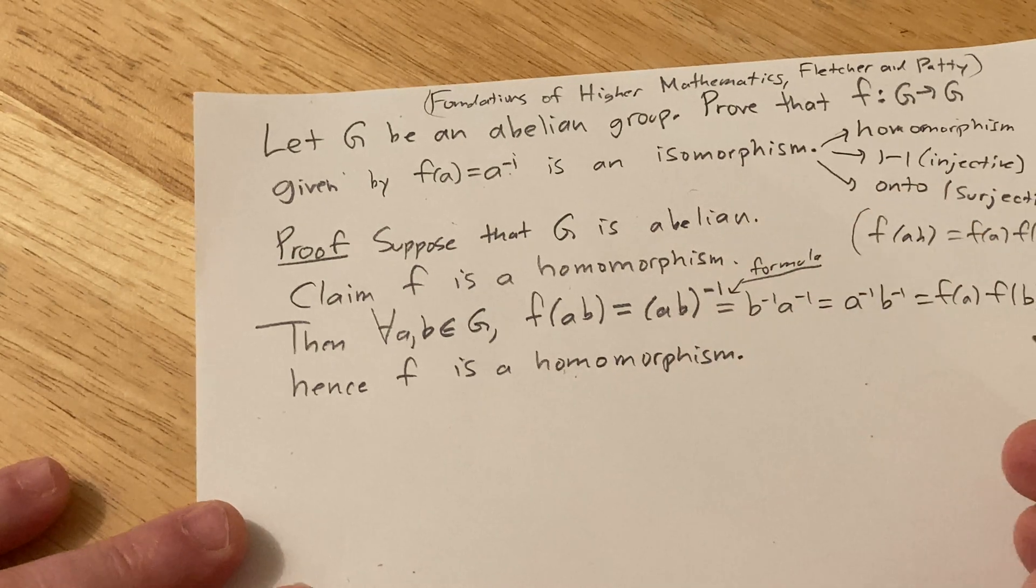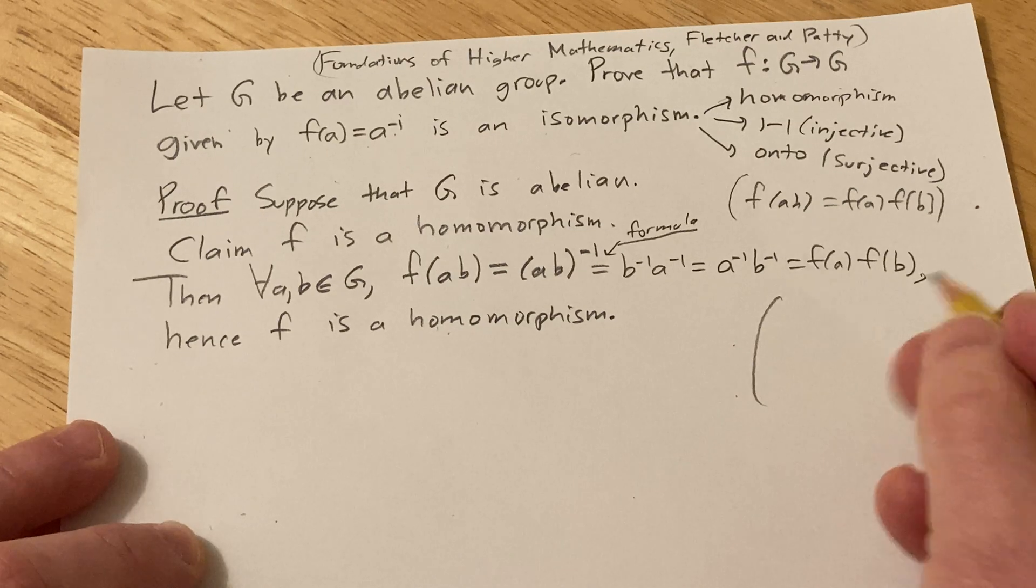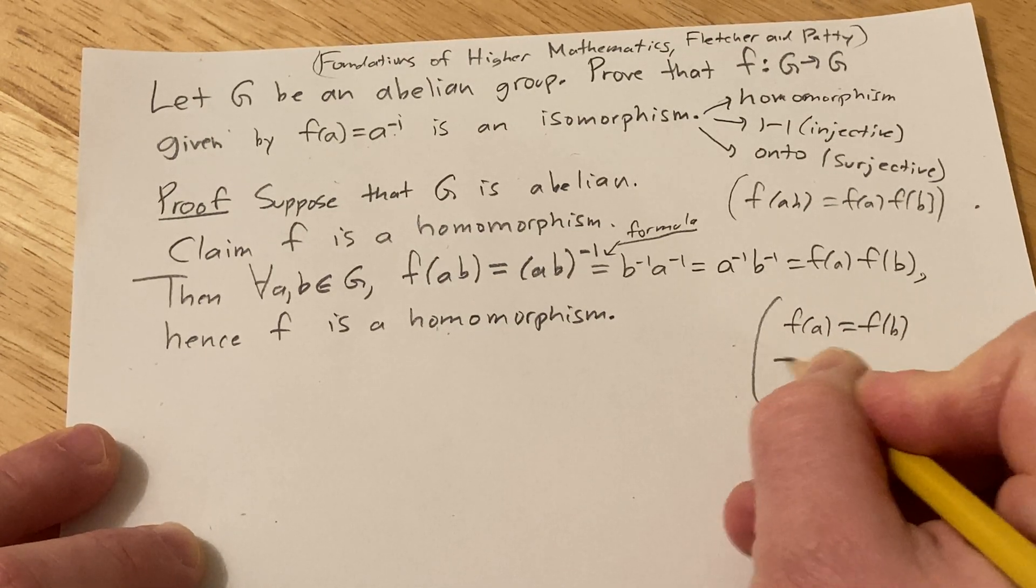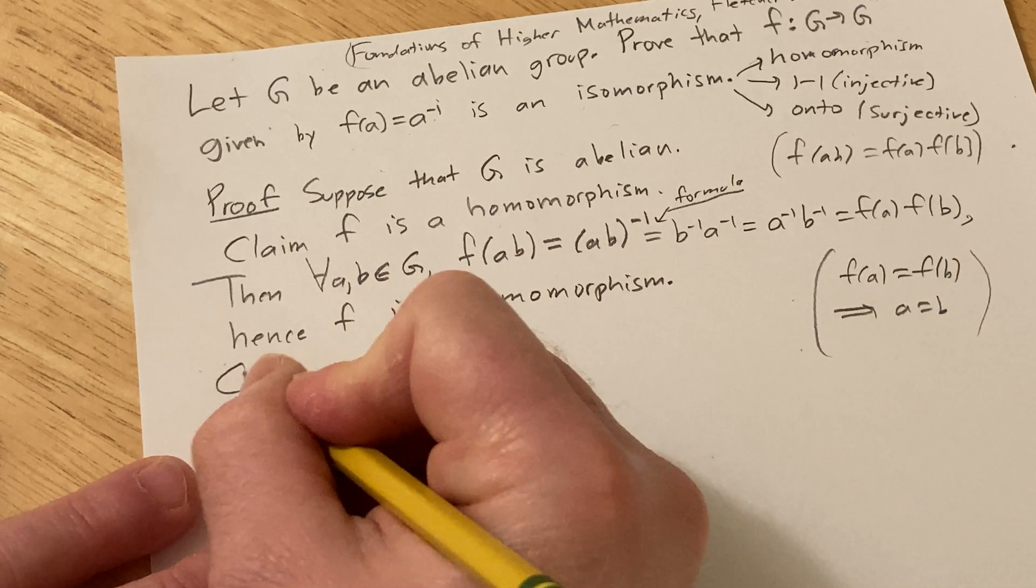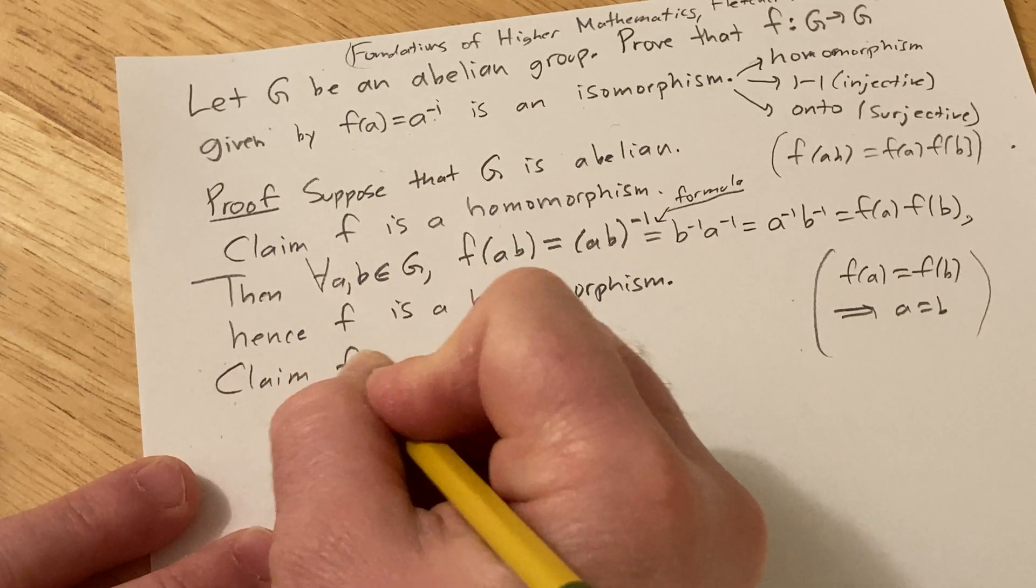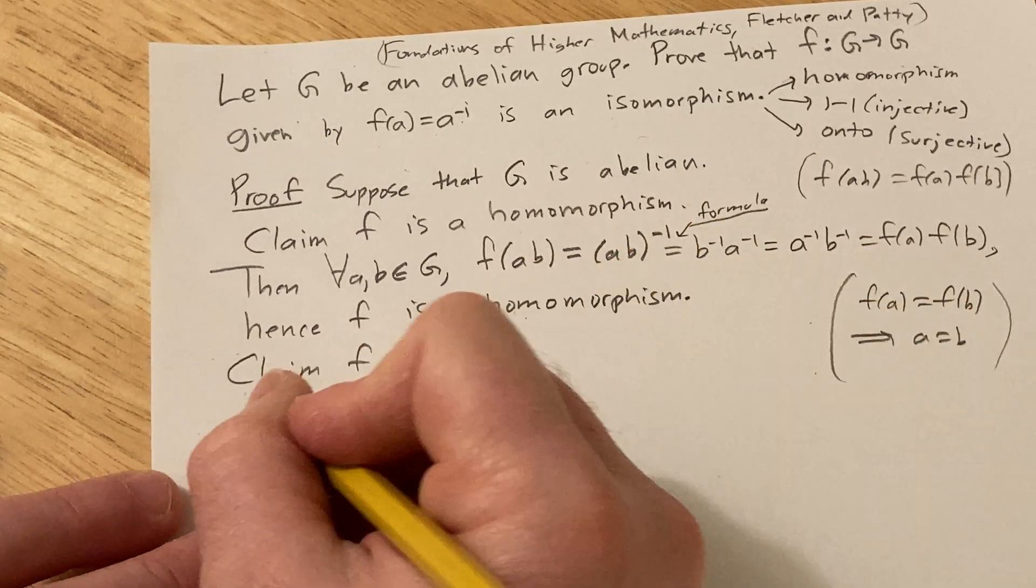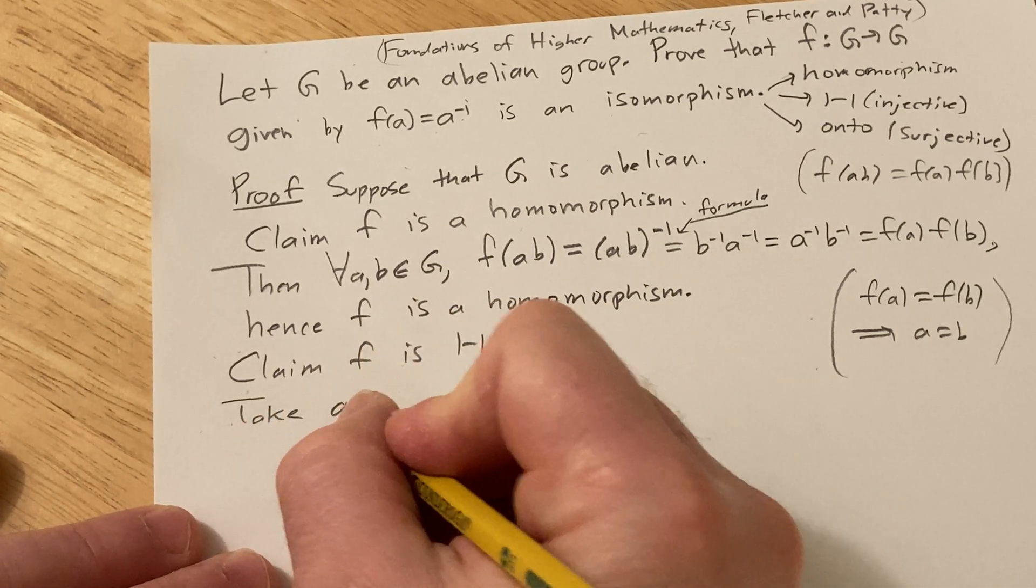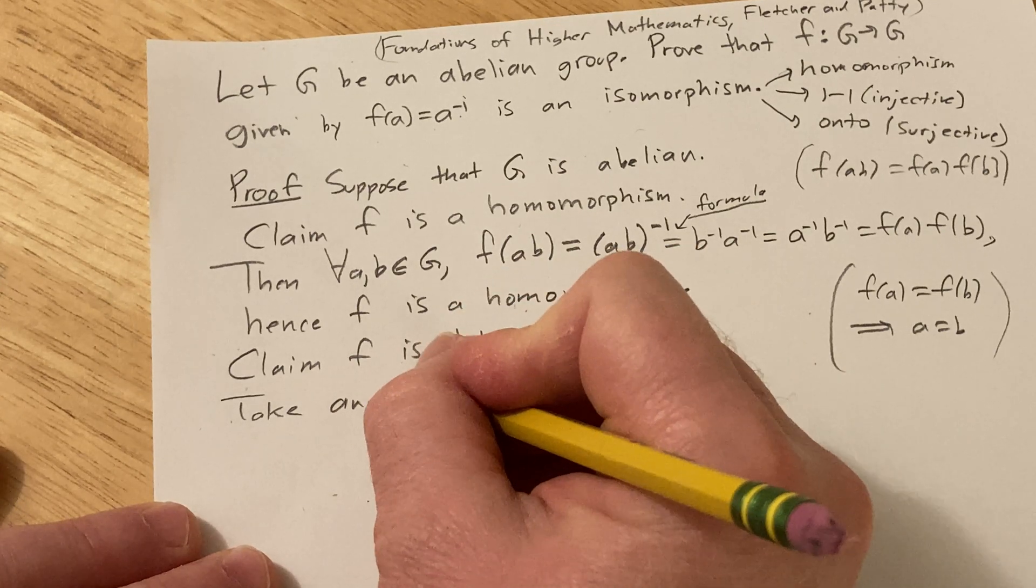All right, now we have to show it's injective. So what does that mean? So injective basically means that for all a and b, whenever you have f(a) equal to f(b) then a is equal to b. So that's what we have to show. So claim: f is one to one, or injective, same thing. So take any, I'm sure you can still see, it's a new camera setup for me. Take any a, b...